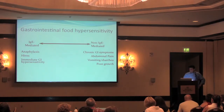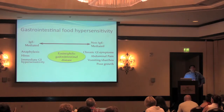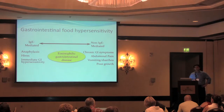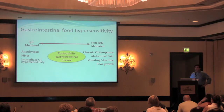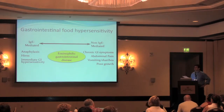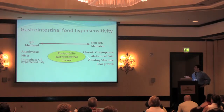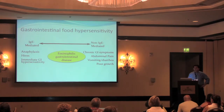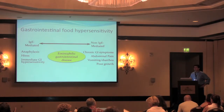Sitting somewhere between IgE-mediated and non-IgE-mediated is something called eosinophilic gastrointestinal disease. There are red blood cells and white blood cells in your body. Red blood cells carry oxygen, and white blood cells help you fight infection. White blood cells also come in several flavors, and one of those flavors is an eosinophil. Eosinophilic gastrointestinal disease sits somewhere between the two types in that it's partially IgE-mediated and partially non-IgE-mediated, so tests can be helpful but not completely.